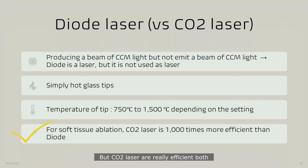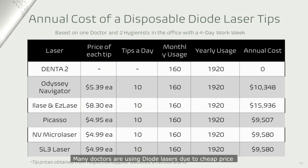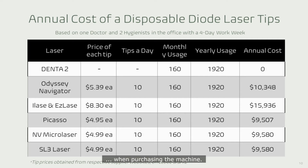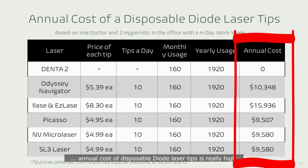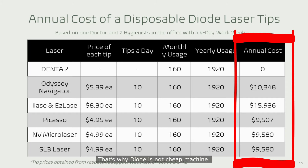CO2 laser is really efficient both at cutting and coagulating soft tissue. Many doctors use diode laser due to its cheap purchase price. However, as you can see in this chart, the annual cost of disposable diode laser tips is really high. That's why diode is not actually a cheap machine.